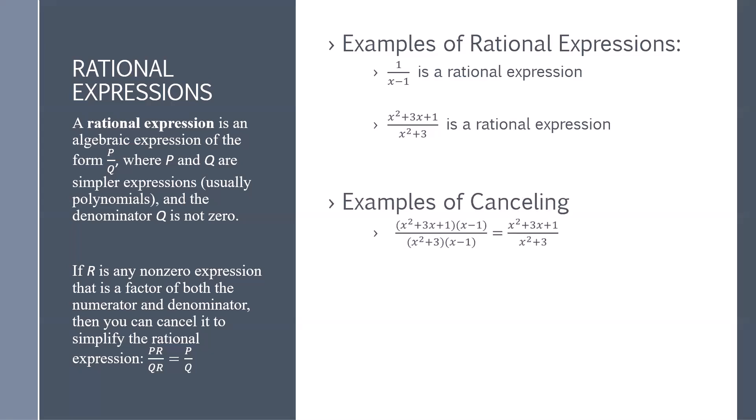As an example of cancelling, if we have x squared plus 3x plus 1 times x minus 1, and x squared plus 3 over x minus 1, we can cancel out the x minus 1's and get x squared plus 3x plus 1 over x squared plus 3.